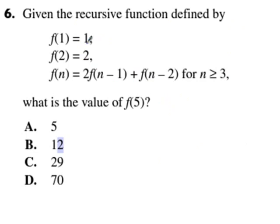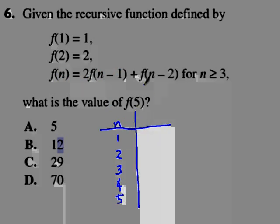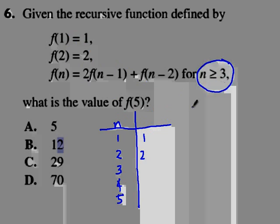So we have here f of 1 is 1, f of 2 is 2, f of n is twice the product of the value of f of n minus 1. So let's say here n is 1, 2, 3, 4, 5, and so on. If n is 1, f of n is 1, f of 2 is 2. If n is greater than or equal to 3, so we have here 3, so we are going to use f of n here.